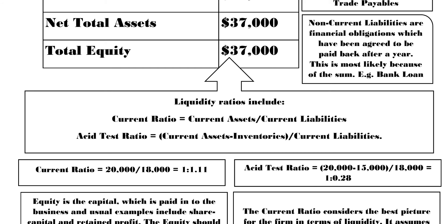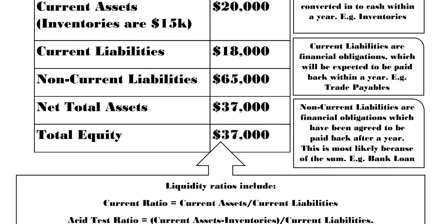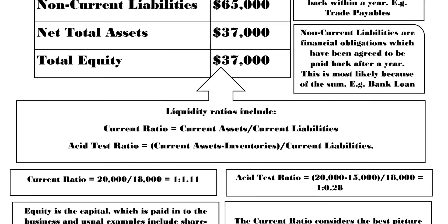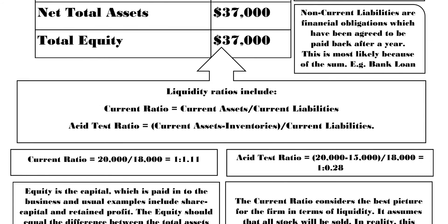The reason the acid test ratio removes inventories is to show how dependent the business is on their stock. In this example the company is very dependent — 15,000 of their current assets is stock. So without stock they have 5,000 current assets divided by 18,000, giving 0.28. For the current ratio of 1.11, this assumes they sell all their stock — they're only just liquid, with 11 cents left over for every $1 of liability.